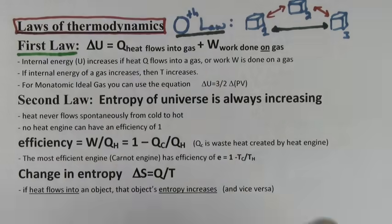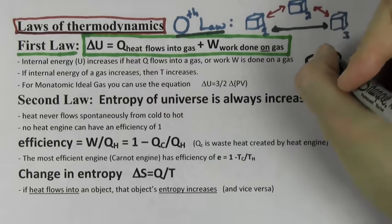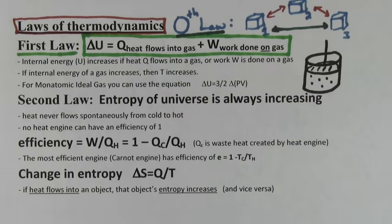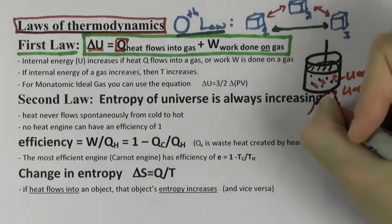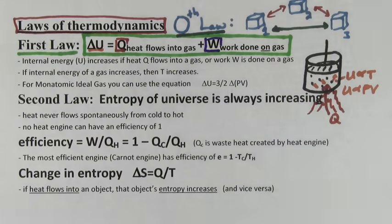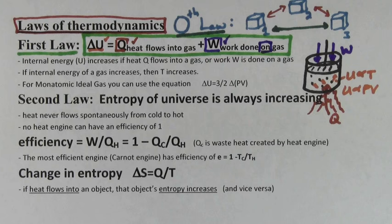The first law of thermodynamics is really a statement of conservation of energy for a gas and a piston. U refers to the internal energy of the gas molecules, which is proportional to the temperature and is proportional to p times v. Q refers to the heat that flows into the gas, for example a fire underneath the piston. W refers to the work done on the gas by pushing down on the piston. If you push down on the piston, causing the volume of the gas to get smaller, you're doing positive work on the gas. If the gas expands, making the volume larger, then the work done on the gas is negative.